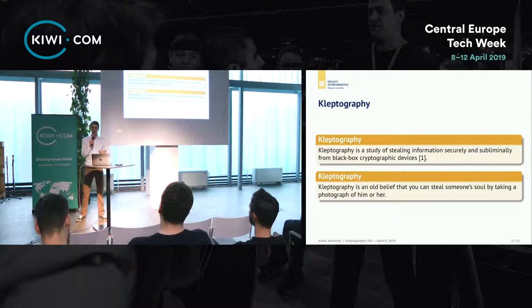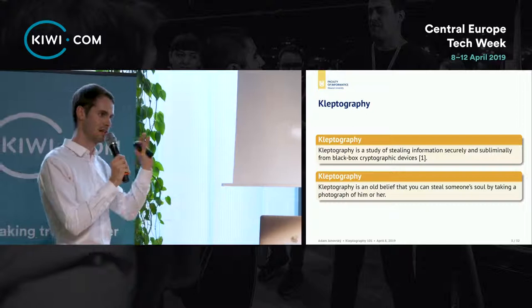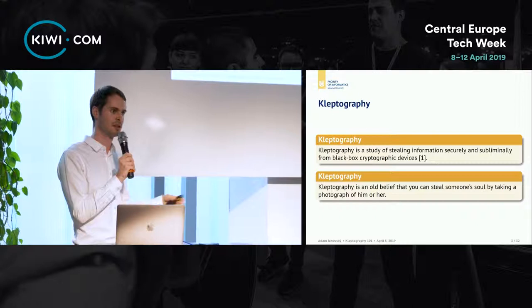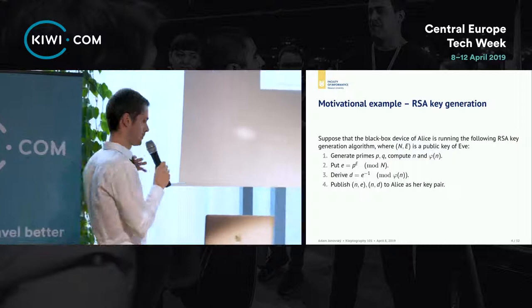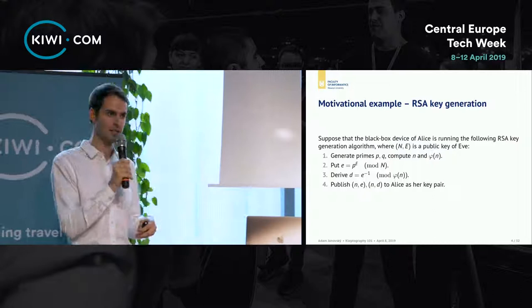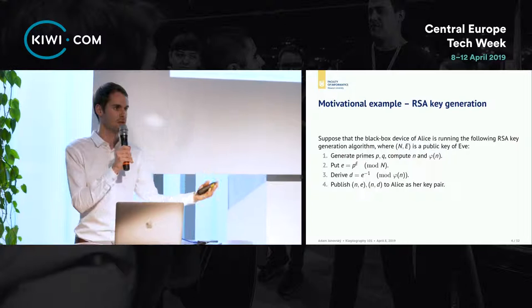I'm going to start with a backdoored version of the RSA cryptosystem that has a tiny detail which limits it from being used in the real world, but it serves as a great educational example. This is an algorithm to create an RSA key pair that has one step that is modified — guess which step it is.